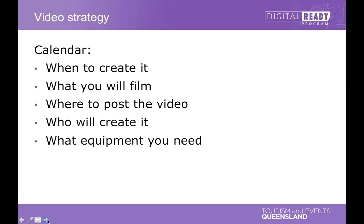The content calendar will tell you when to create content, what you will film, where to post a video — you might decide it would be great on Facebook and Pinterest but not so good on Twitter. You also need to work out who will create the video and what equipment you need. If you go to your local camera shop or jump onto eBay, you might find a really good tripod that suits your smartphone for under $50, and that might help make your videos look a little bit more professional.